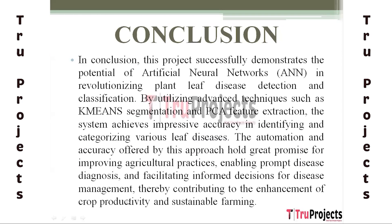In conclusion, this project showcases the potential for artificial neural networks in revolutionizing plant leaf disease detection and classification. Utilizing advanced techniques like K-means segmentation and PCA feature extraction, the system achieves impressive accuracy in identifying and categorizing leaf diseases. This automation offers great promise for improving agricultural practices, enabling prompt disease diagnosis and facilitating informed disease management decisions, contributing to crop productivity and sustainable farming.